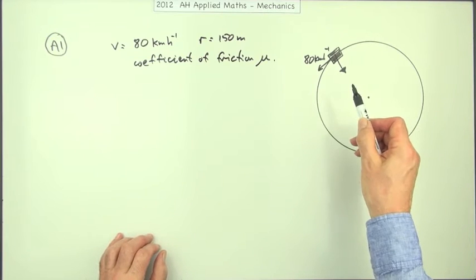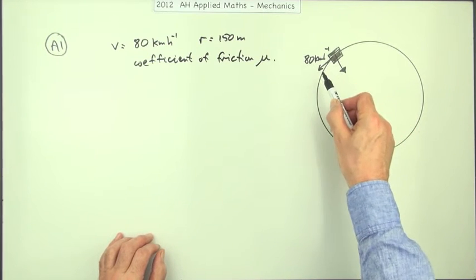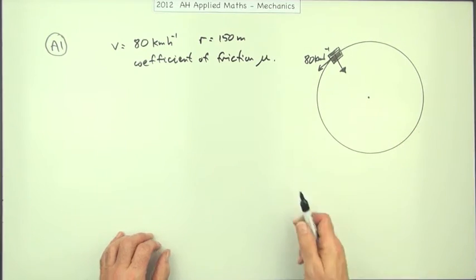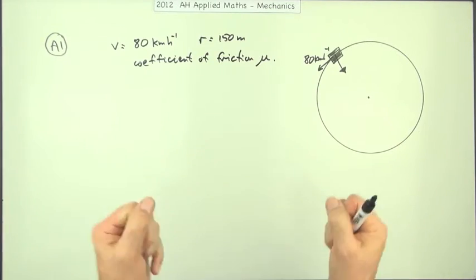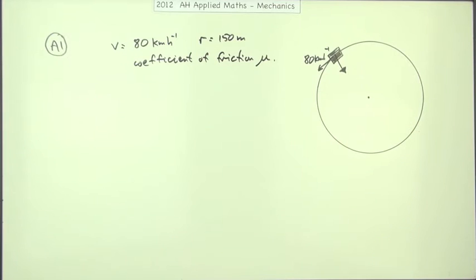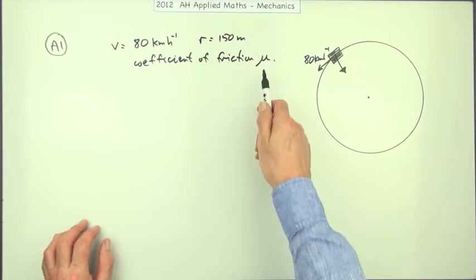And the only way that can be provided is by the friction between the tires and the track. Not the steering itself. The steering would do nothing. Move the steering about on a slippy surface, you just keep skating in the same direction. No, it's the tires that are holding you in. And that's why the question said, what's the coefficient of friction?